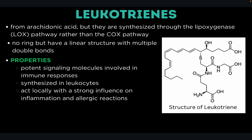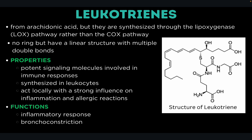Last would be leukotrienes. Leukotrienes are another group of bioactive lipids derived from arachidonic acid, but they are synthesized through the lipoxygenase pathway, or LOX pathway, rather than the COX pathway like prostaglandins and thromboxanes. Leukotrienes do not have a ring structure; instead, they have a linear structure with multiple double bonds. They are potent signaling molecules involved in immune responses, synthesized in leukocytes — white blood cells — and act locally, influencing inflammation and allergic reactions. Their key function is inflammatory response and bronchoconstriction, causing the narrowing of the airways. That is all for part 2 of lipids.